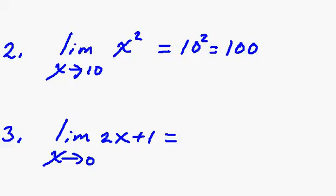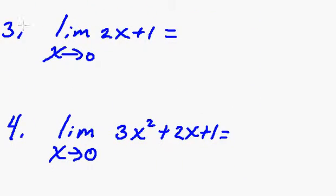All right, moving right on to number three. The limit of 2x plus 1 as x approaches 0, so we just do direct substitution. We plug 0 in, so 2 times 0 plus 1 is going to be equal to 1. Easy enough.